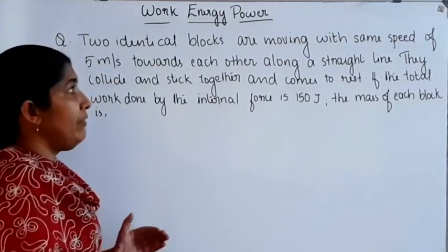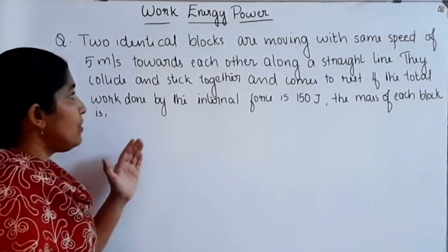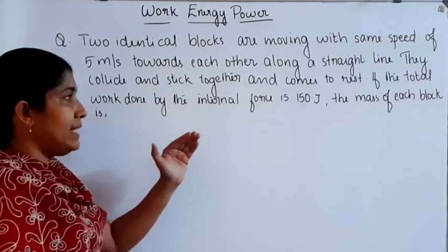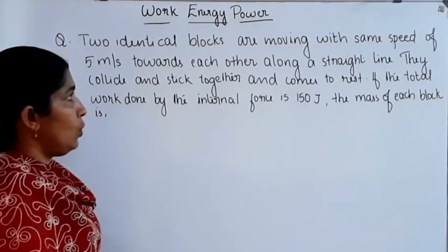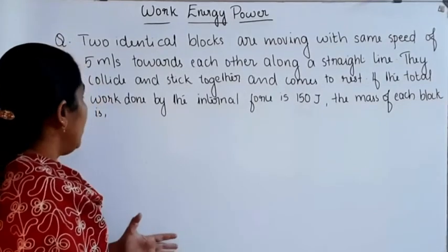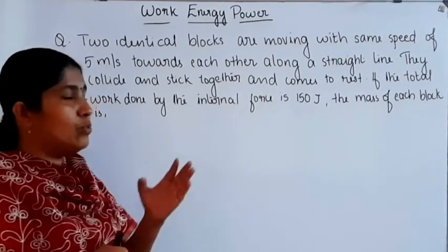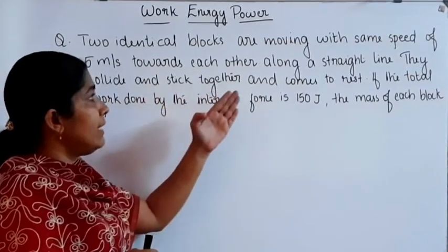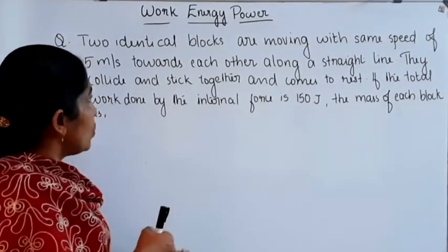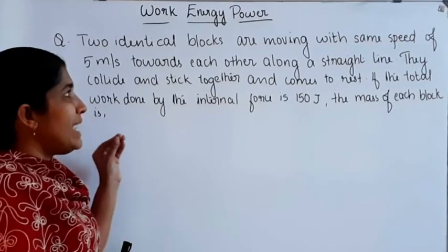Two identical blocks moving with the same speed of 5 m/s towards each other collide, stick together and come to rest. If the total work done by the internal force is 150 joules, find the mass of each block.